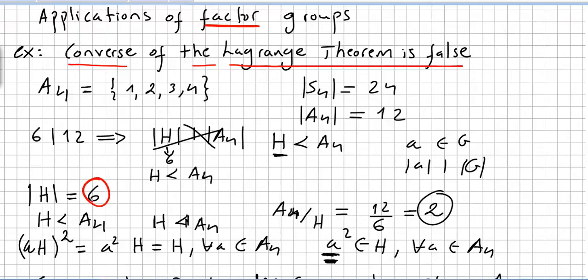Because 6 divides 12. 12 is the order of the alternating group 4, A4. But there is no subgroup of order 6 in A4. So this was one way, one application of the factor groups.